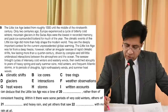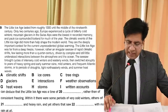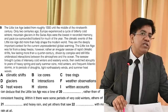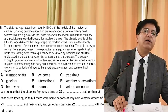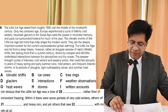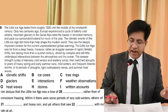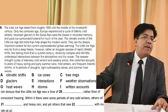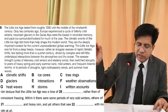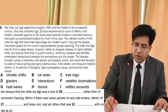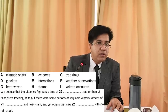In the second paragraph, towards the middle: 'They are the deeply important context for the current unprecedented global warming. Now, the Little Ice Age was far from a deep freeze' — the clue word was 'freezing.' The sentence reads: 'The Little Ice Age was far from a deep freeze; however, rather an irregular seesaw of rapid climatic shifts.' So the answer for question 20 is A — rapid climatic shifts. At present, most answers in summary completion questions come in order.